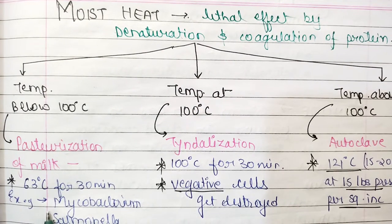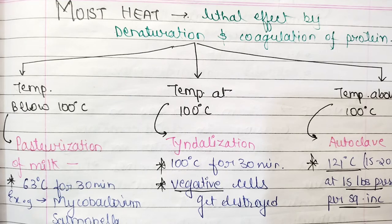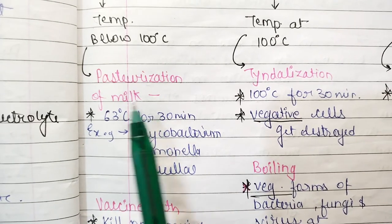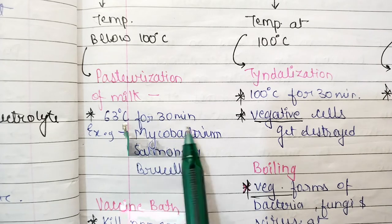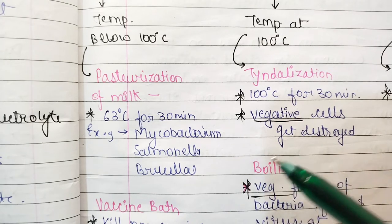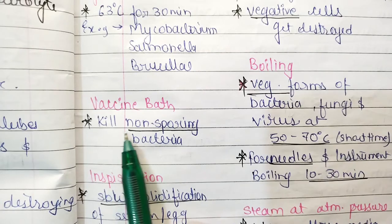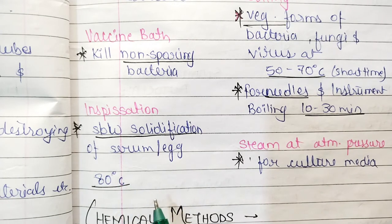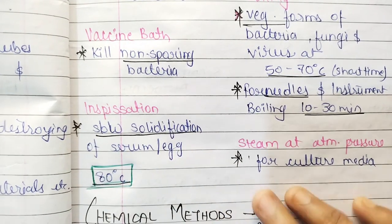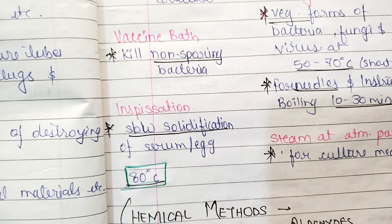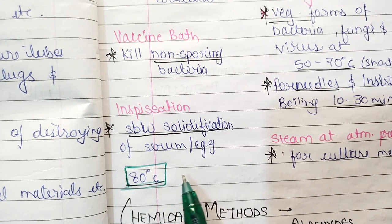If the temperature is below 100 degrees Celsius, pasteurization of milk occurs at 63 degrees Celsius for 30 minutes. Examples of bacteria that die include Mycobacterium, Salmonella, and Brucella. Vaccine treatment kills all non-sporing bacteria. Inspissation involves slow solidification of serum and eggs at 80 degrees Celsius. Important exam points: pasteurization is at 63°C, and inspissation is at 80°C.